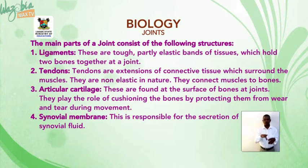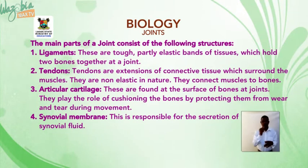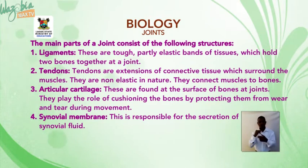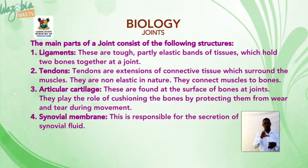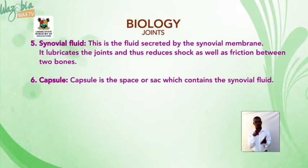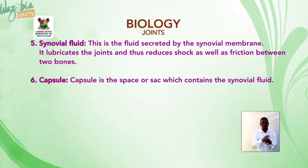Articular cartilage: these are found at the surface of bones at joints. They play the role of cushioning the bones by protecting them from wear and tear during movements. Synovial membrane: this is responsible for the secretion of synovial fluid. Synovial fluid lubricates the joints and thus reduces shock as well as friction between two bones.